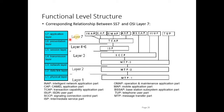If we compare the OSI model with the SS7 model, then at layer 7 — which is basically the application layer — the user parts that use the services of the MTP layers are INAP, CAP, MAP, BSSAP, ISUB, and TUP, which are telecommunication protocols belonging to the application layer.